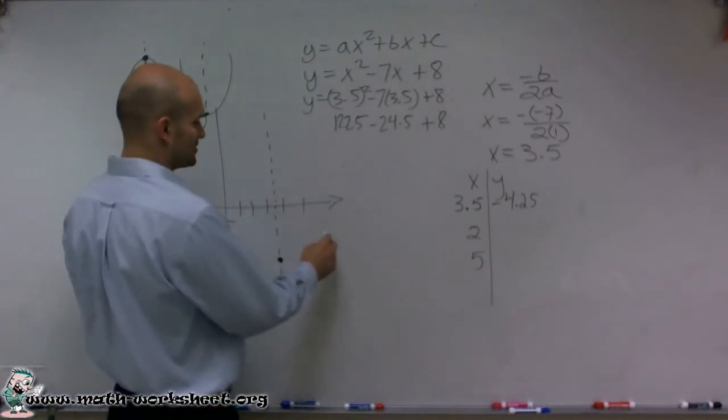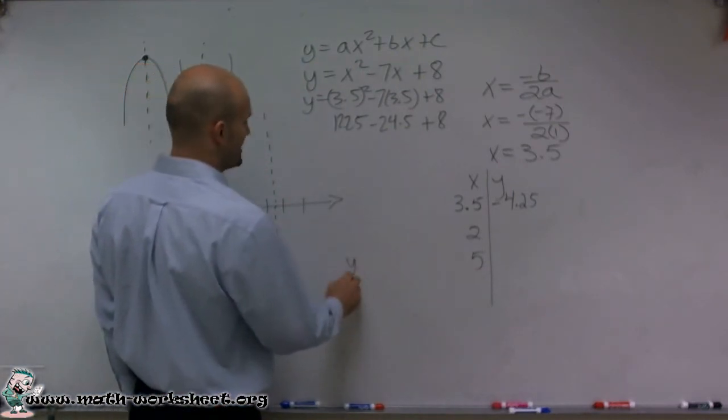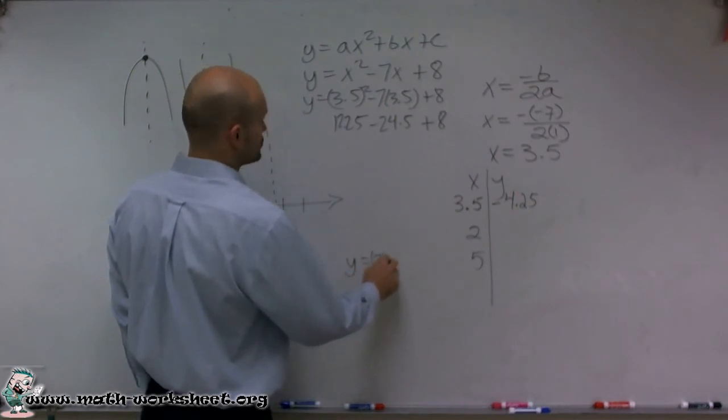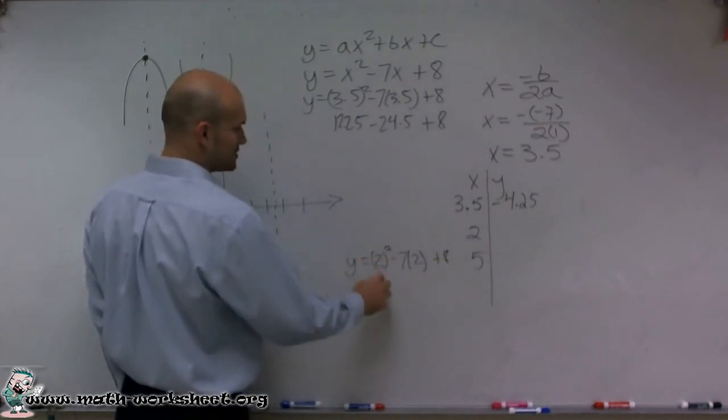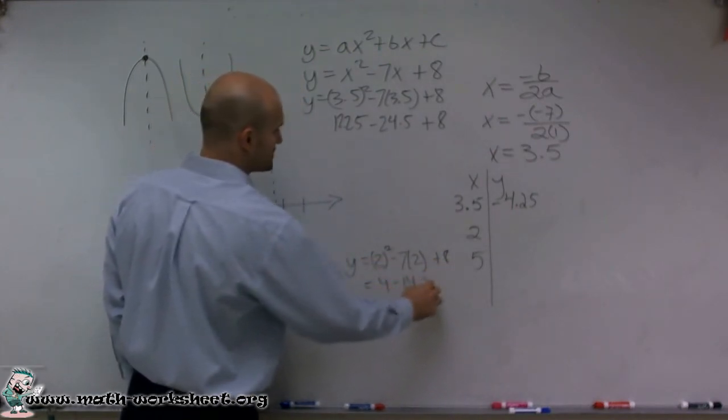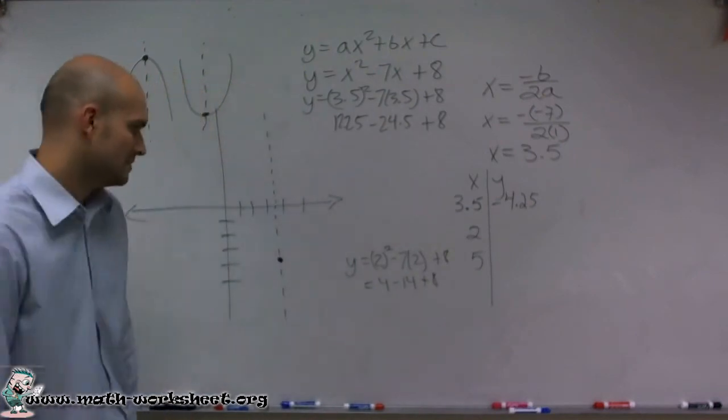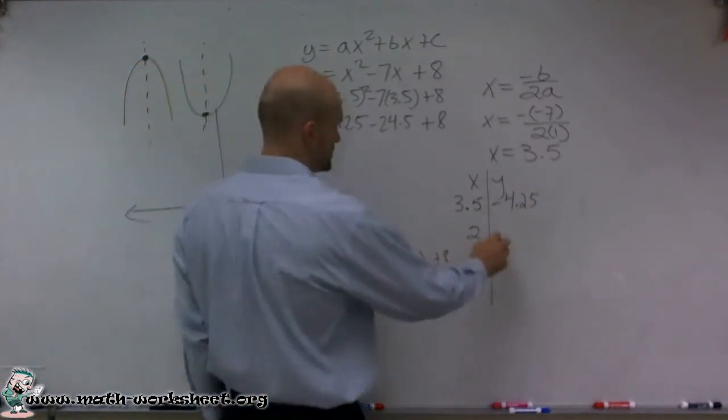Let's do 2, because 2 looks like it might be pretty simple. I have y equals 2 squared minus 7 times 2 plus 8. That equals 4 minus 14 plus 8, and it looks like you're going to have negative 2.